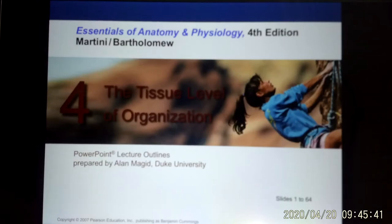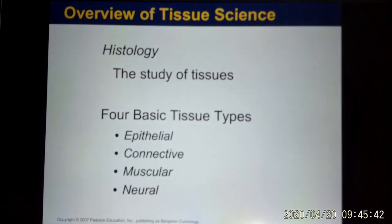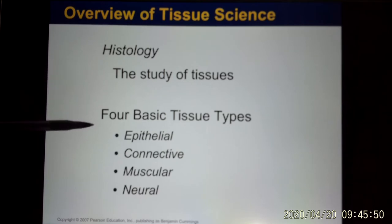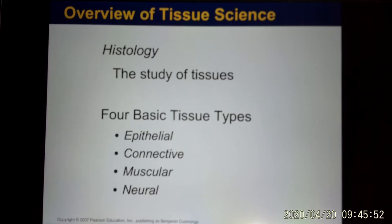We are in the tissue. To study tissues is called histology. Today we will talk about four different kinds of basic tissues: epithelium, connective, muscle, and neuron.